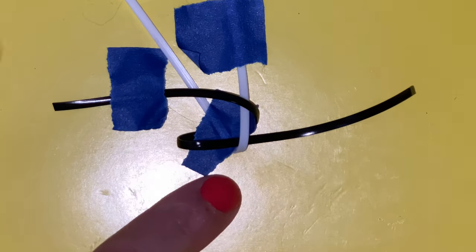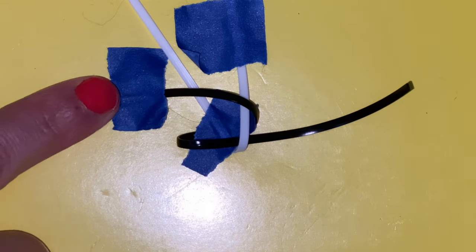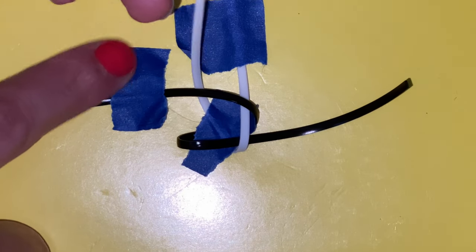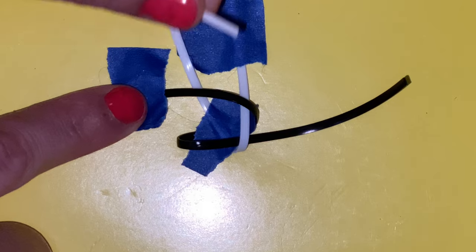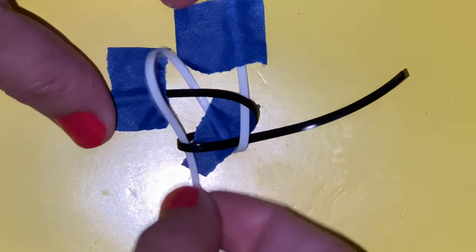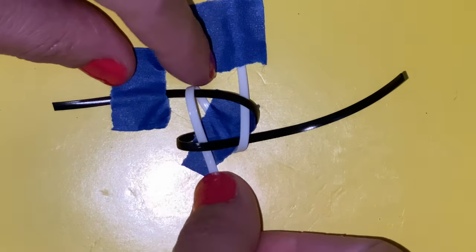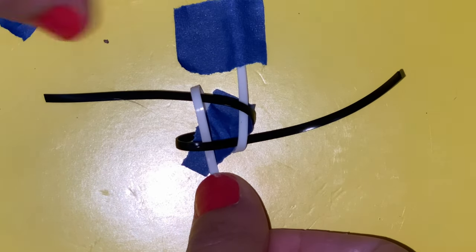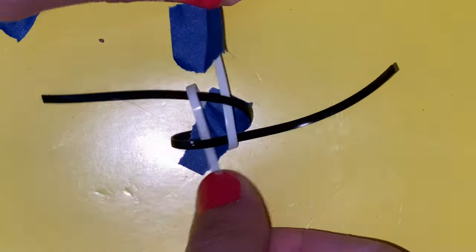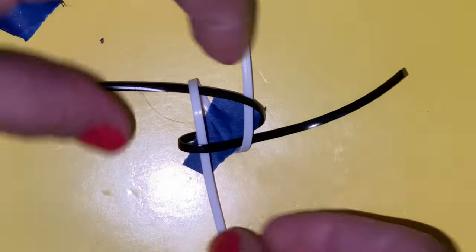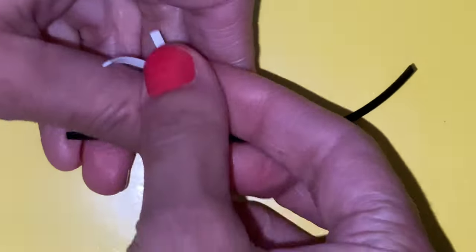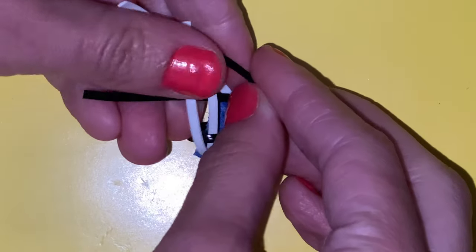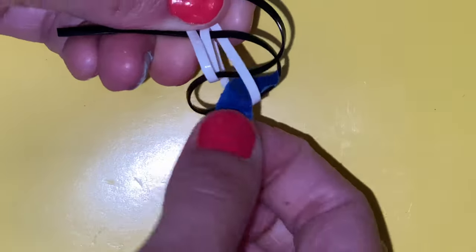I'm going to do the same thing over here. I'm going to take this white string and go over this loose black string and underneath the black loop here. Next, I'm going to take this blue tape off, and I can take these strings in my hand and pull this blue tape off as well.